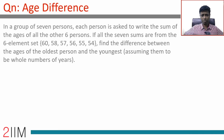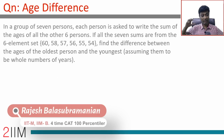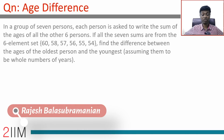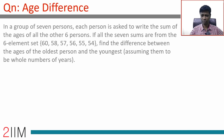Age difference in a group of seven persons: each person is asked to write the sum of the ages of all the other six persons. If all the seven sums are from the six-element set {60, 58, 57, 56, 55, 54}, find the difference between the ages of the oldest person and the youngest person.